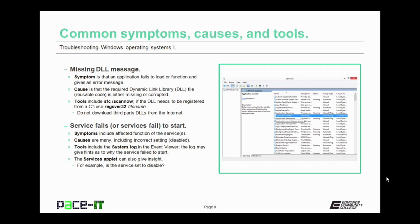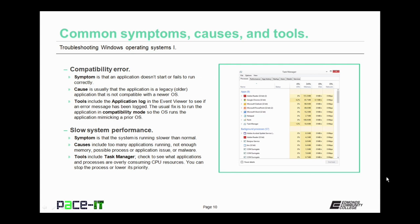Every once in a while you'll get a compatibility error. The symptom is that the application either doesn't start or fails to run properly. The cause is that the application is legacy — it's older and not compatible with a newer OS. Tools to fix this include the application log in Event Viewer to see if an error has been logged indicating a compatibility issue. The usual fix is to run the application in compatibility mode so the operating system mimics an older operating system.